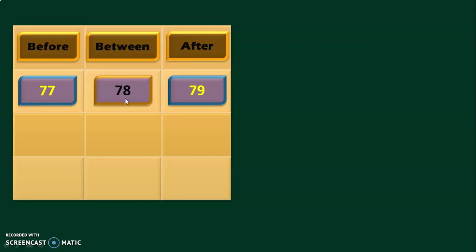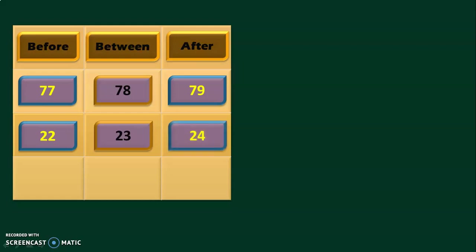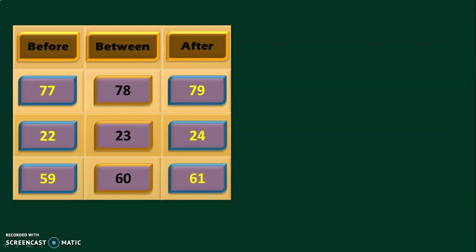Let us move on to the next question. The number given is 23. The number before 23 is 22, and the number after 23 is 24. What is the number before 60 and after 60? The answer is: the number before 60 is 59, and after 60 is 61.